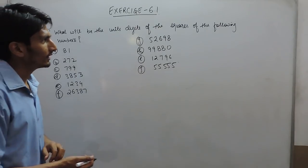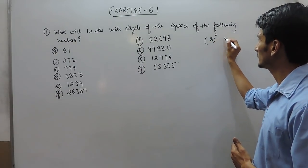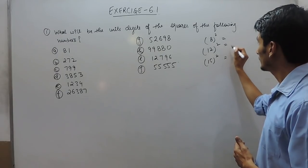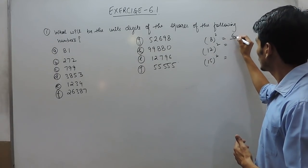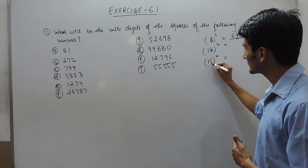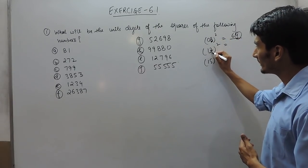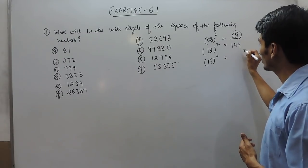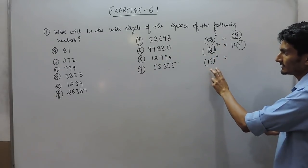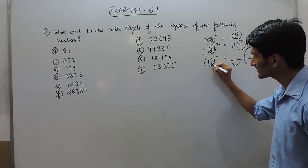Before solving this, one thing we must know: any number when squared — the unit digit of the answer will depend only on the unit digit of that number. For example, when 08 is squared the result is 64, so the unit digit depends on 8 squared. When 12 is squared we get 144, meaning the unit digit depends only on the unit digit of the number being squared.